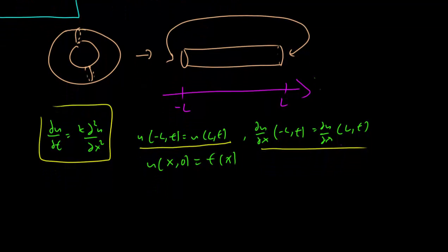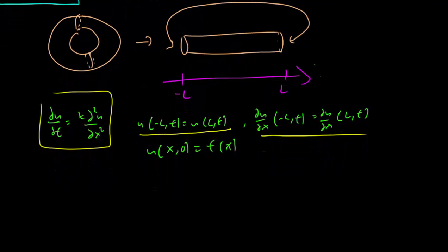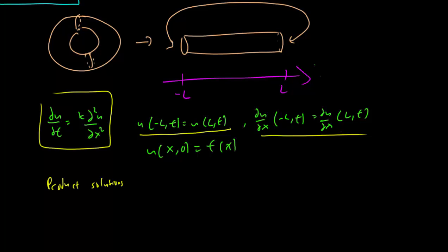We begin as we did the other cases by finding the product solutions. So we look at the product solutions of the form u(x,t) equals f(x)g(t) once more.